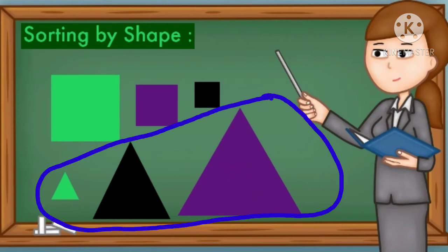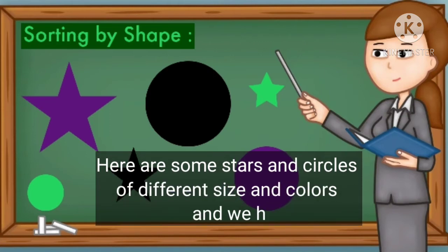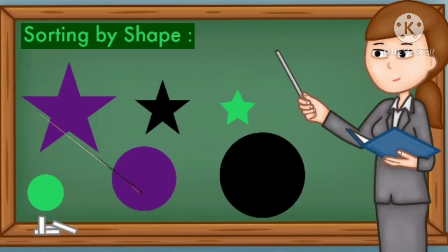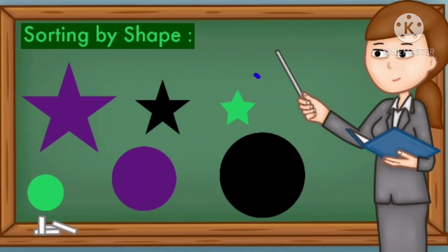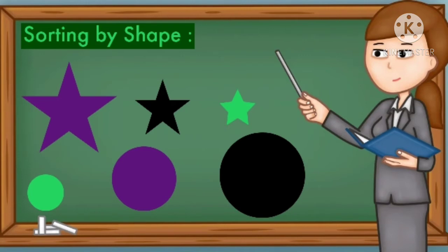Here are some stars and circles of different size and color, and we have to sort these by the same shape. This is a star, this is also a star, and this is also a star — so we have sorted all stars. This is a circle, this is also a circle, and this is also a circle — so we have sorted all circles.